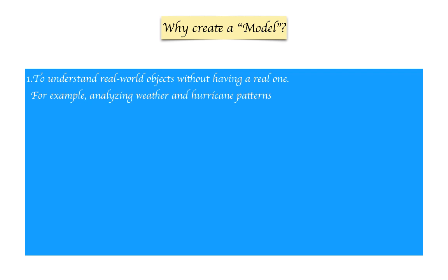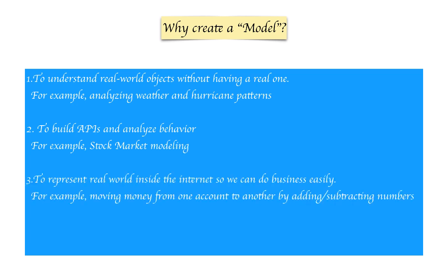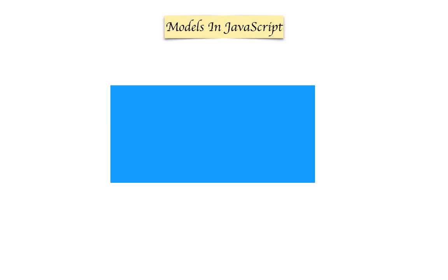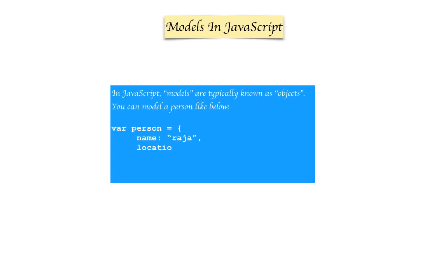Why create a model? First, to understand real-world objects without having a real one. Second, to build APIs and analyze behavior. Third, to represent real-world things inside the internet so we can do business easily — for example, moving money from one account to another by simply adding and subtracting numbers. Finally, to persist ideas for generations. In JavaScript, models are typically known as objects — a simple key-value pair.